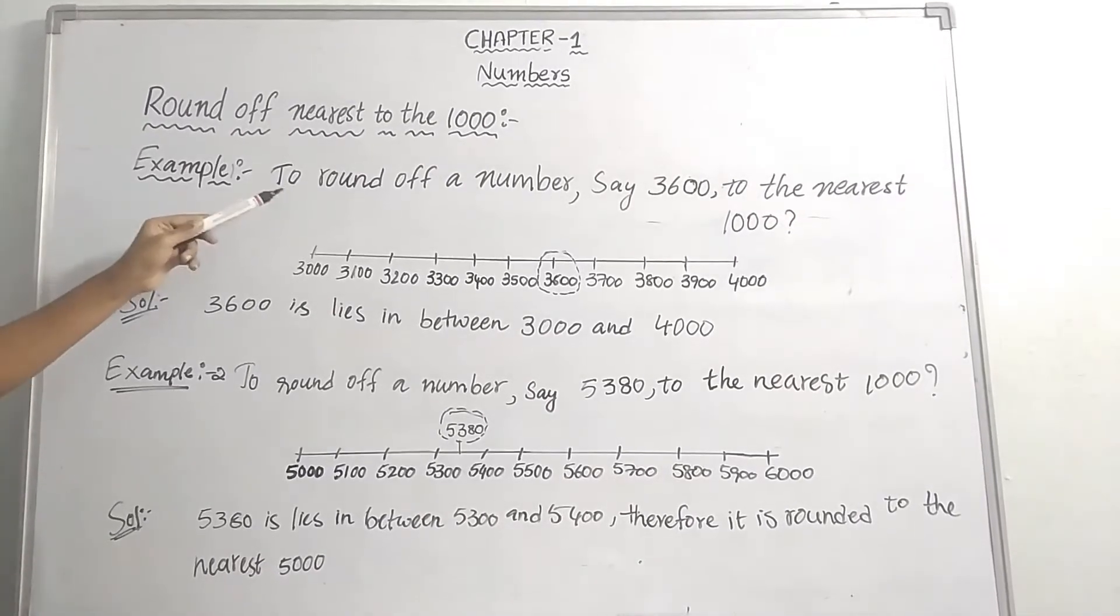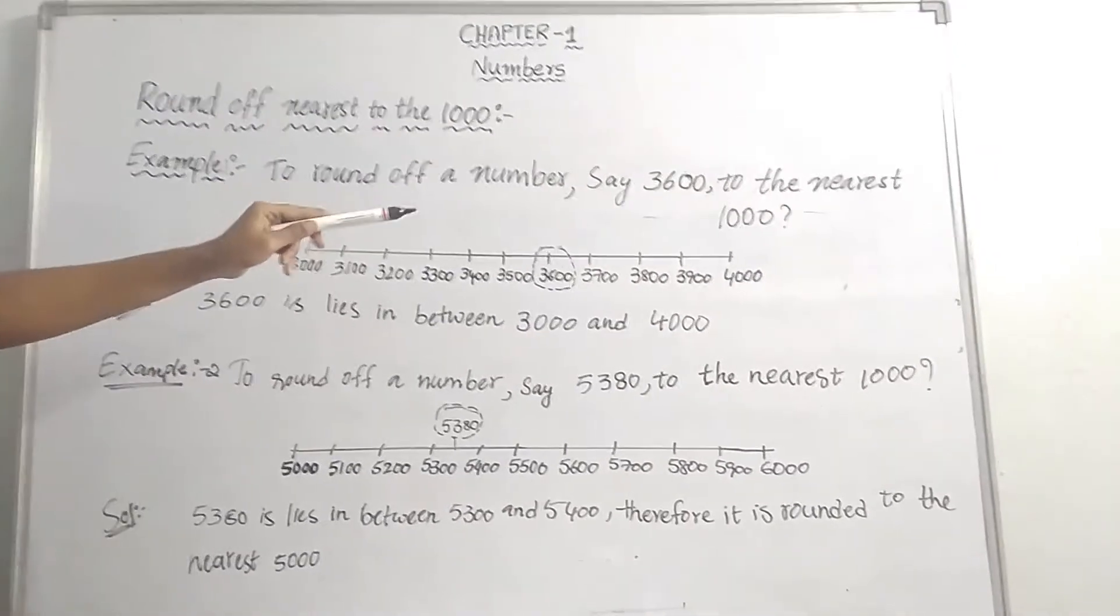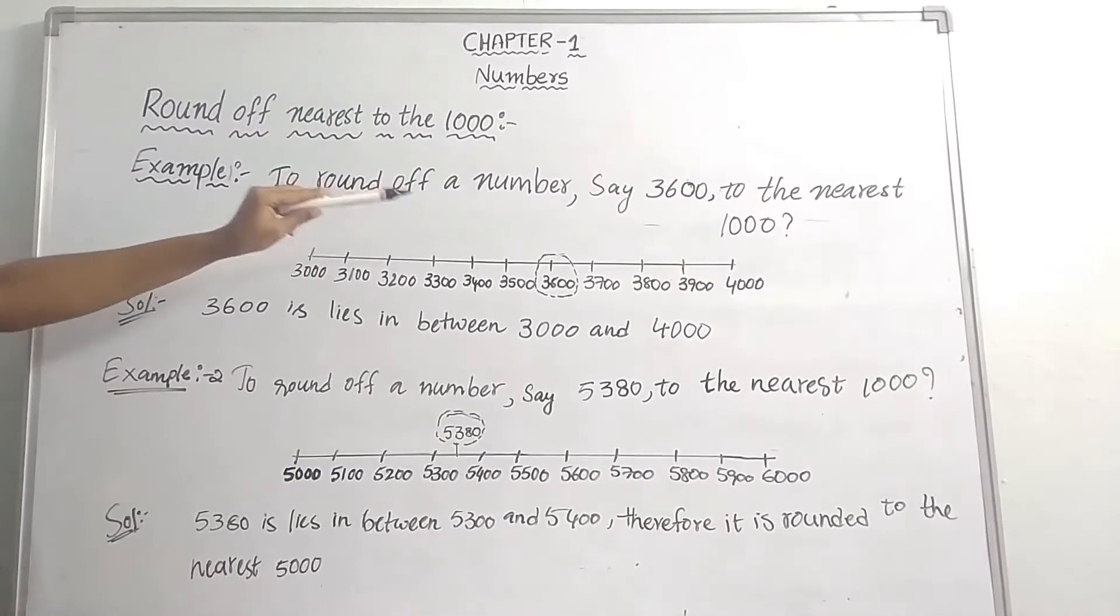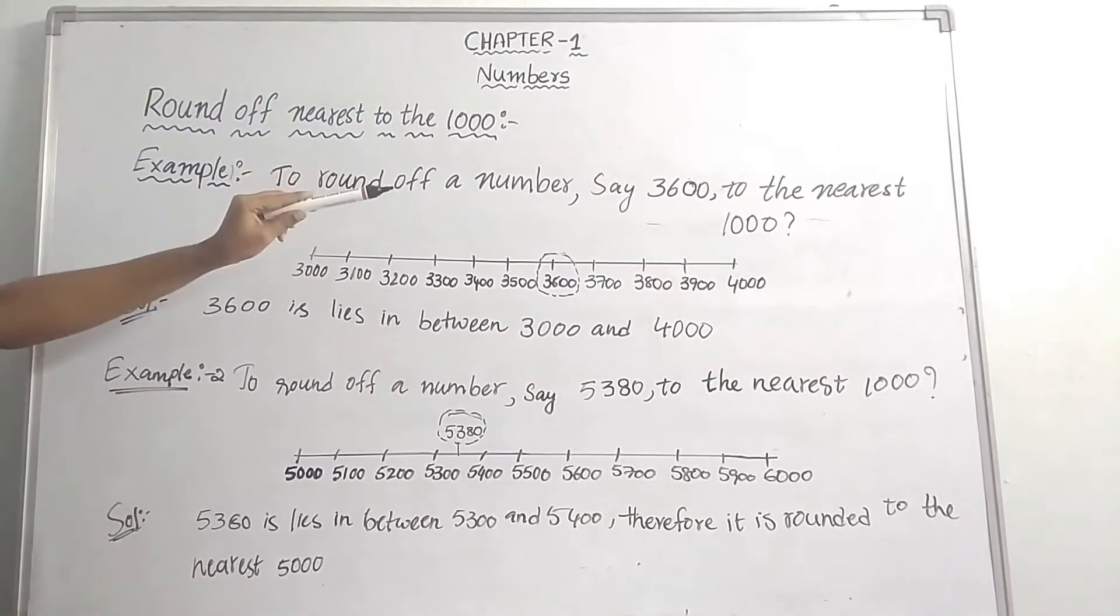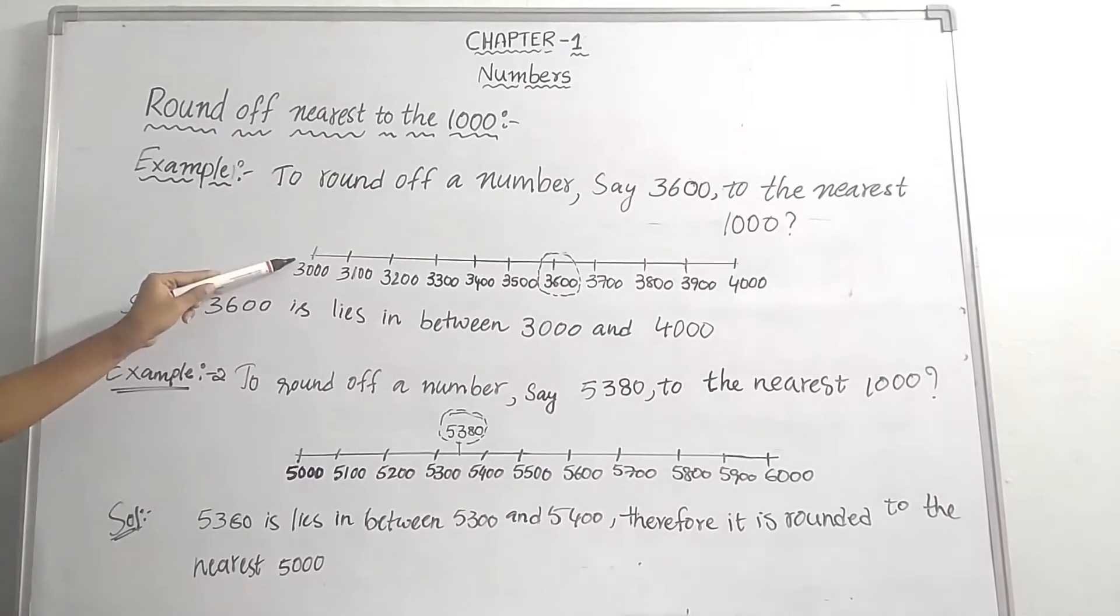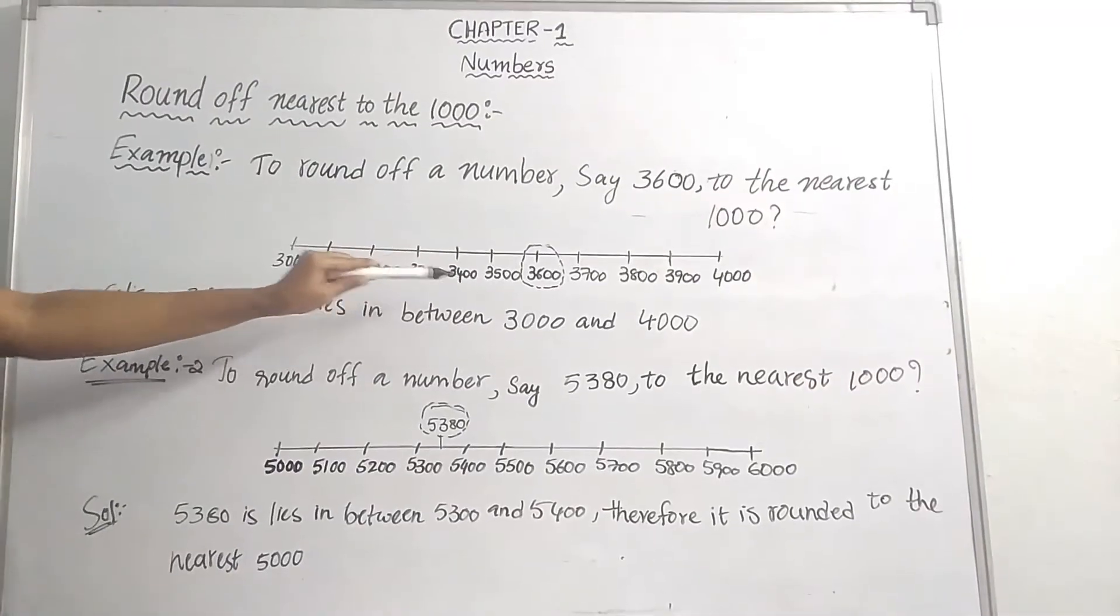Example: To round a number, say 3600, to the nearest thousand. This is a thousands value number. So we are taking a scale from 3000 to 4000. We want the number 3600.